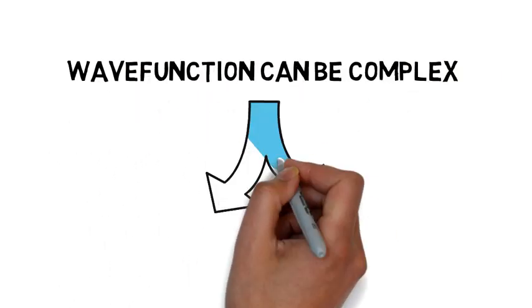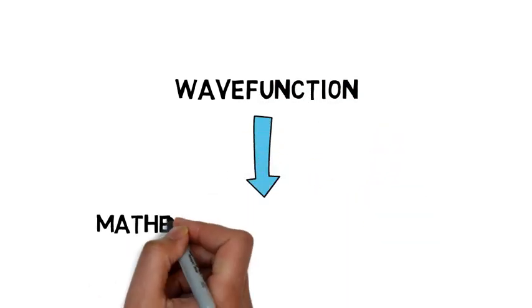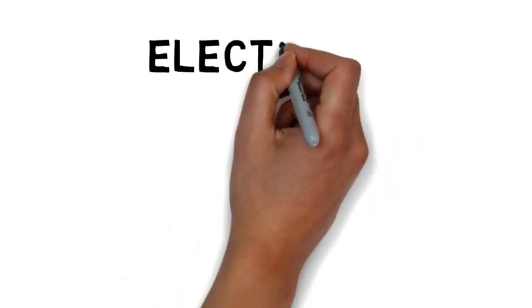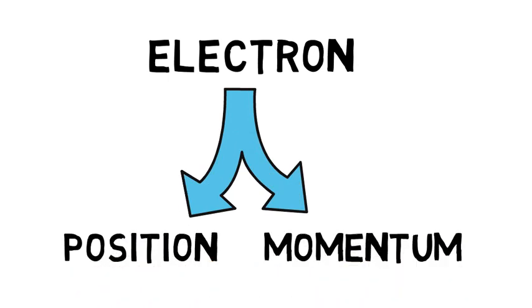The wave function can be complex, meaning it will have a real part and an imaginary part. We can say the wave function is the mathematical way to represent the state of the electron. To determine the properties of the electron like position and momentum, we have to do mathematical operations.